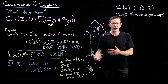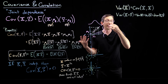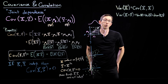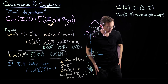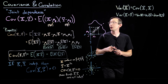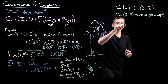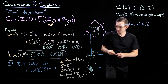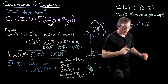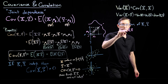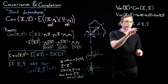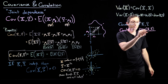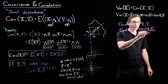Covariance is a way of quantifying the joint dependence between two random variables. If the two variables are highly correlated — a variation in x implies a variation in y — there will be a high covariance. If there is a low correlation between x and y, there will be a low covariance. The correlation is essentially just a normalized covariance: Cor(x, y) = Cov(x, y) divided by the standard deviation of x times the standard deviation of y.